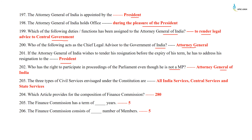The three types of civil services envisaged under the Constitution are All India Services, central services, and state services. Which article provides for the composition of the Finance Commission? It is Article 280. The Finance Commission has a term of five years and consists of five members.